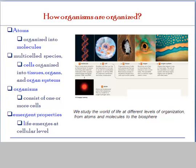Now let's look at the first terminology I skipped — organization. Let's look at how organized living creatures are. The basic fundamental building block of many living creatures is a cell. But the cell is also organized from molecules, and molecules are made up of atoms. Atoms would be something like carbon, hydrogen, or oxygen — elements present in our world that are then organized to form molecules.